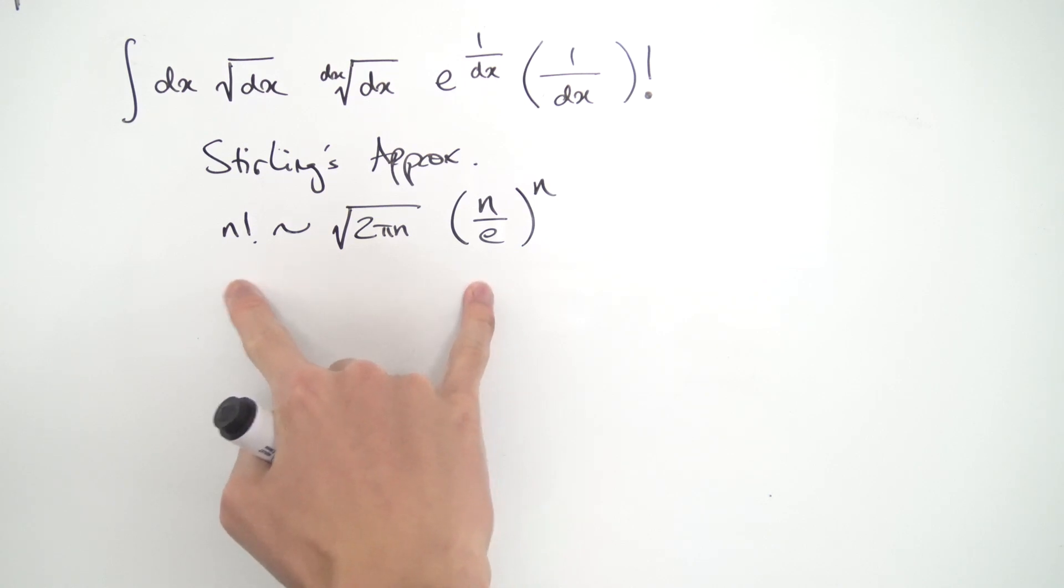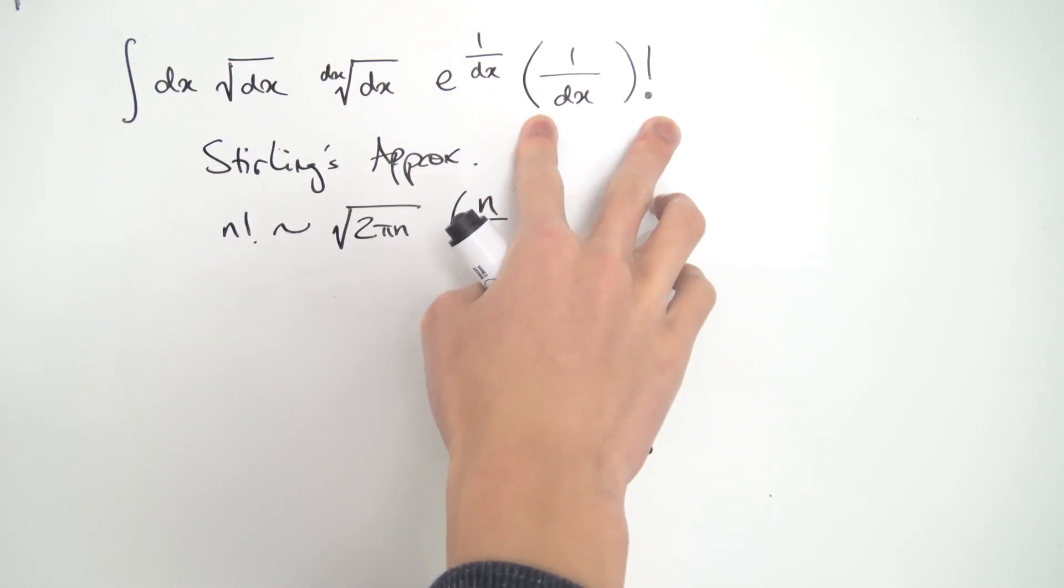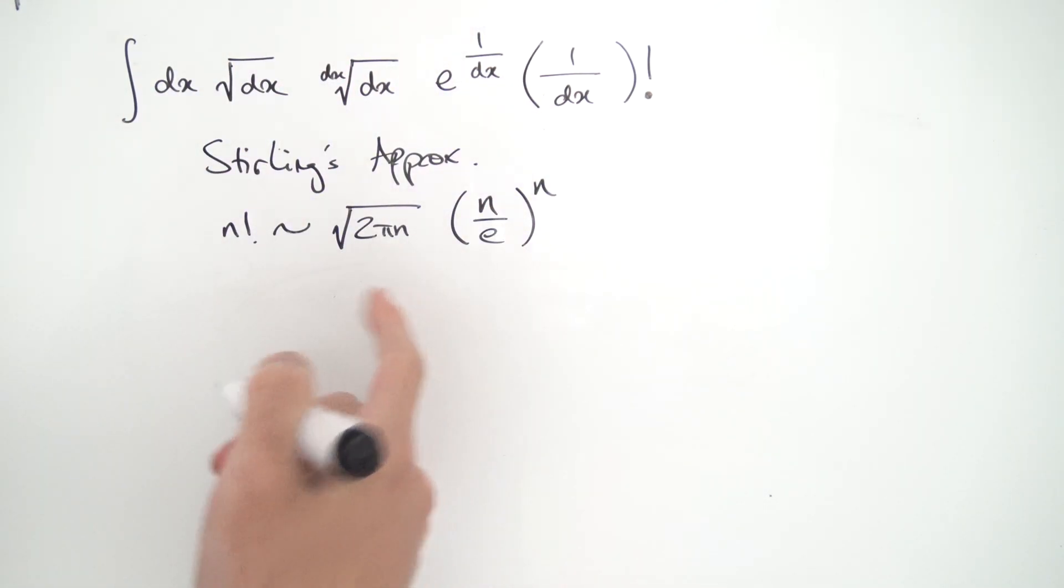So this only works as n becomes very, very big. And we can use this because 1 over dx is becoming very, very big. So we can actually replace this 1 over dx factorial with its asymptotic approximation.